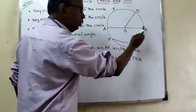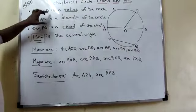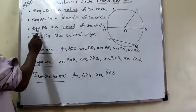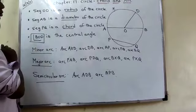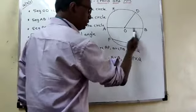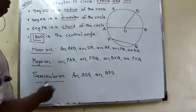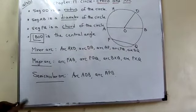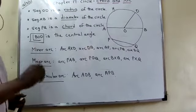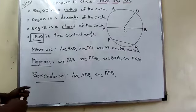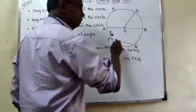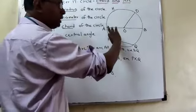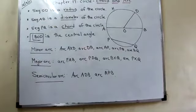Segment OD is a radius of the circle. Segment AB passes through the center, therefore AB is called a diameter. Diameter is like a chord, but it passes through the center. Diameter means double the radius — OB is one radius, OA is one radius, so AB is twice the radius.